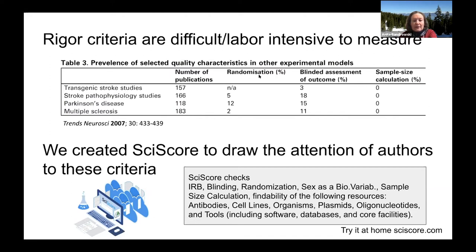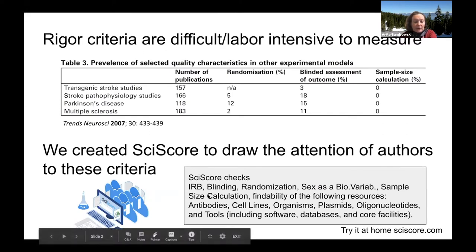Reading 500 papers versus what comes out in the scientific literature is very different. So we created a tool called SciScore to interact with authors on some of these criteria. SciScore checks things like blinding, randomization, sex as a biological variable, and whether the authors actually did sample size calculations. It also checks whether research resources or reagents are findable — whether they contain enough information to identify the precise resource, including antibodies, cell lines, oligonucleotides, plasmids, and various other tools.